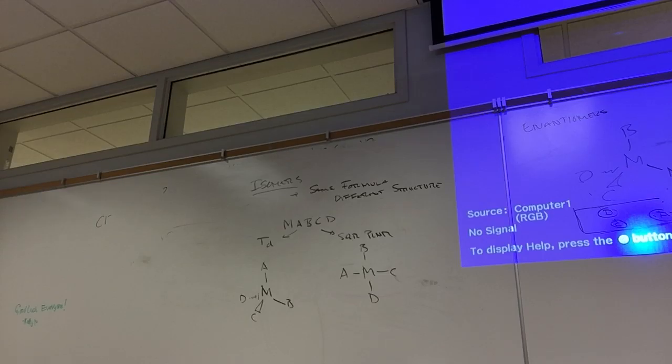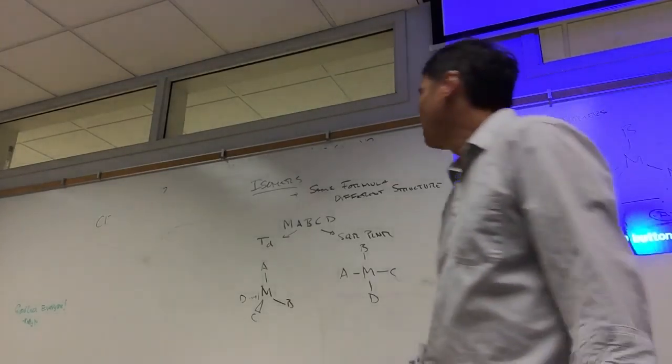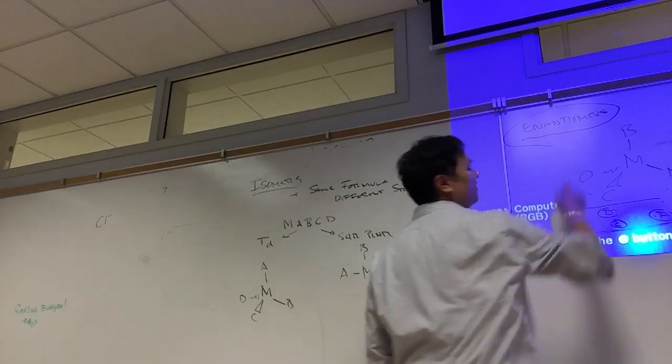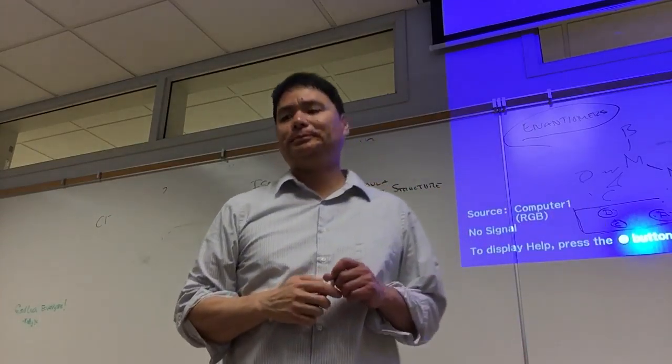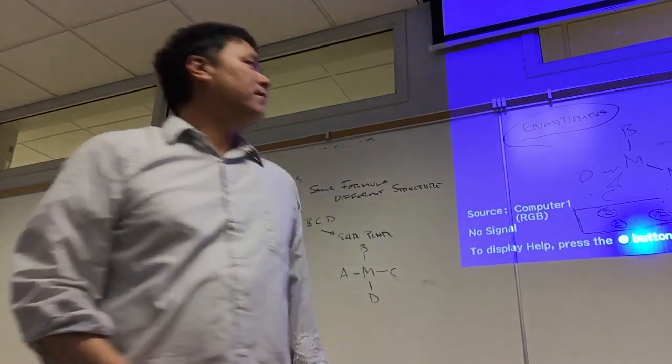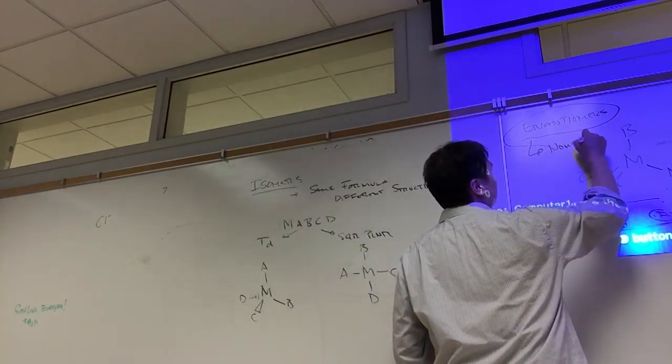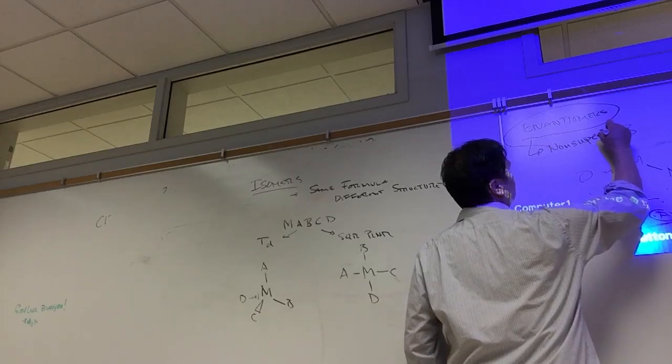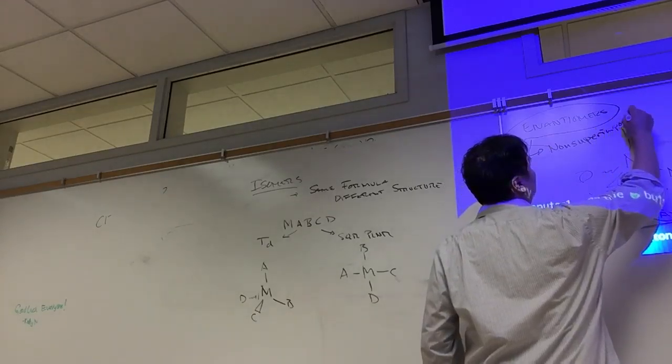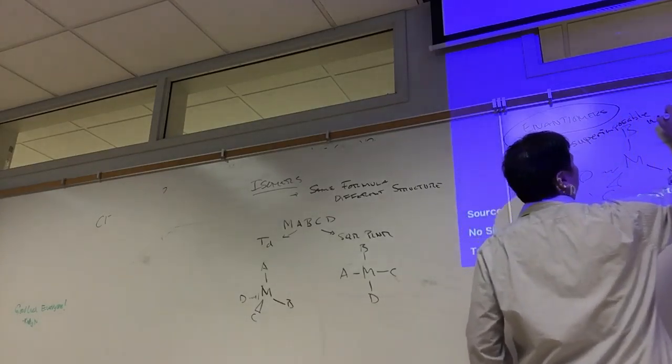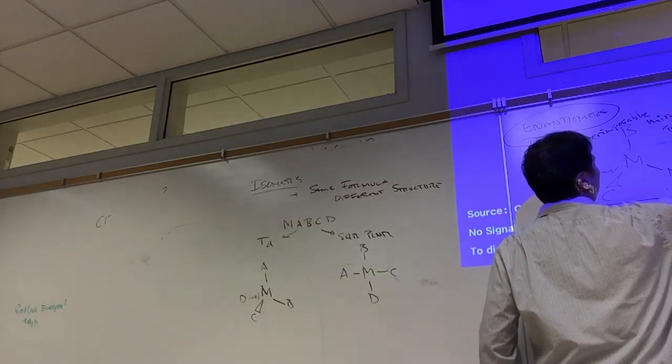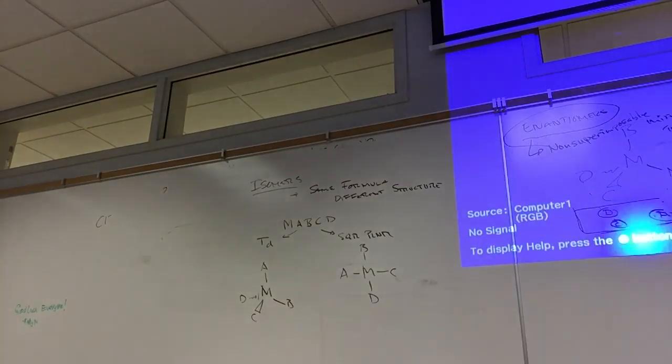Enantiomers, these are also called chiral structures. Chiral is just another word, but you should just know enantiomers, or optical isomers. So the definition of enantiomers is non-superimposable mirror images. Let me get rid of this blue screen.